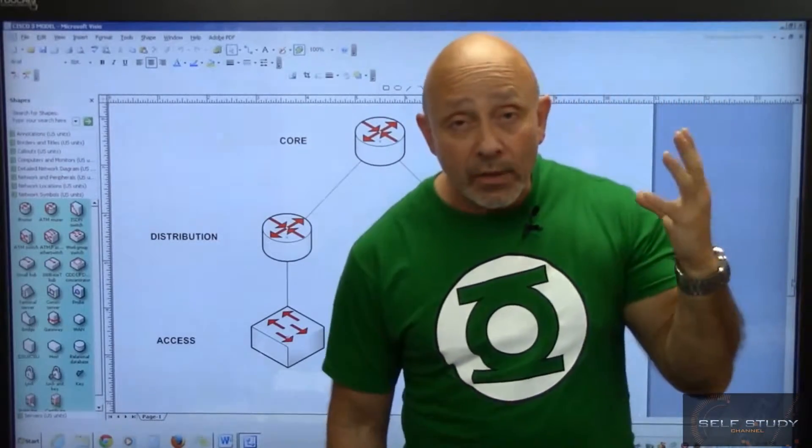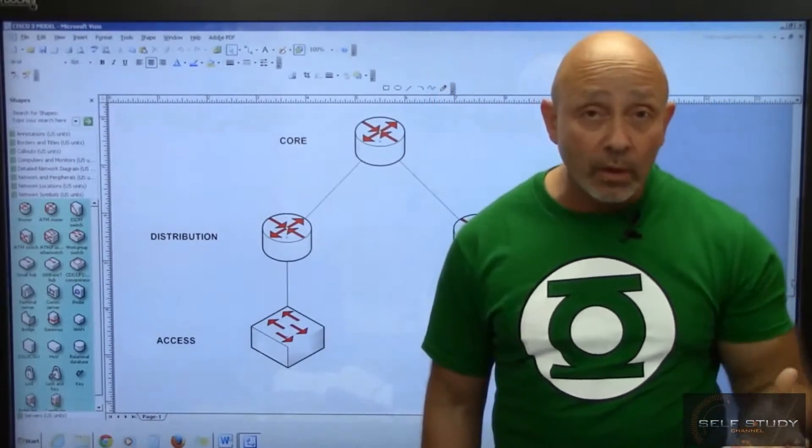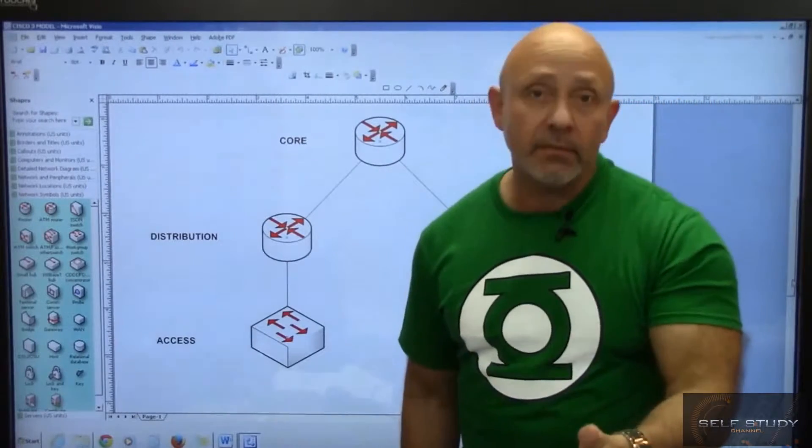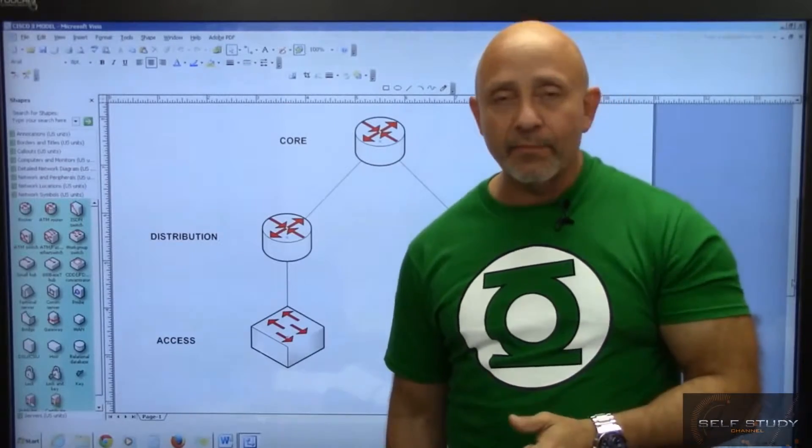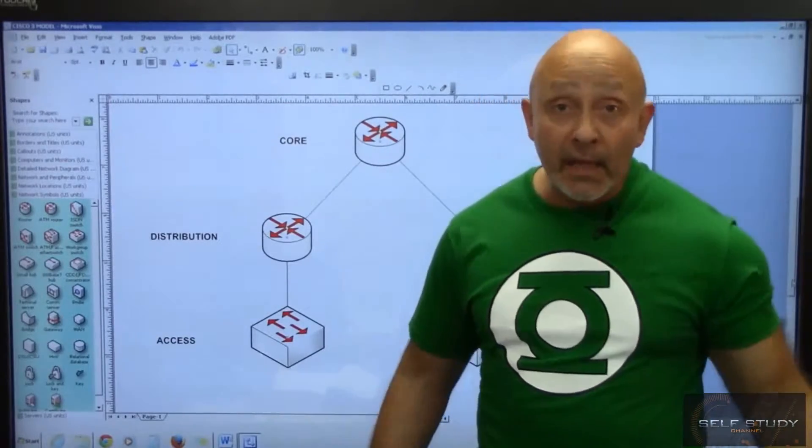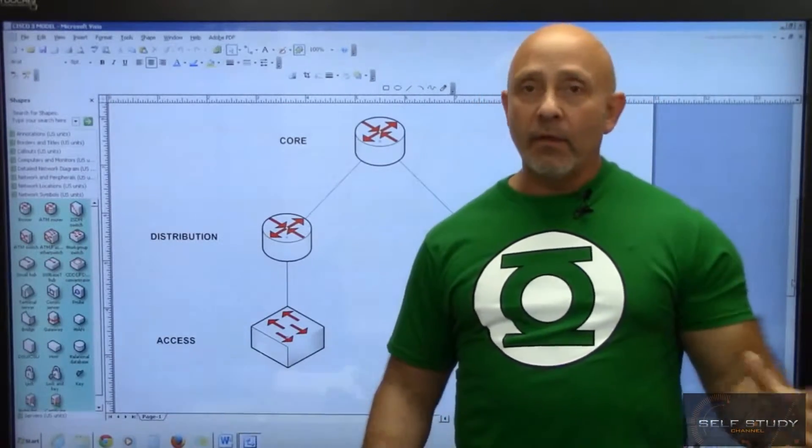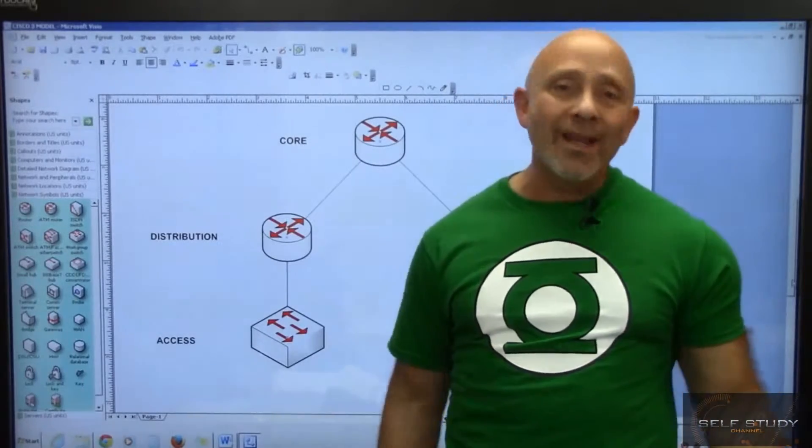What do you need to be concerned with at the core? Speed. You're not going to have a 56k connection going up there. You're going to have Metro Ethernet, OC-151 lines, major bandwidth going across.